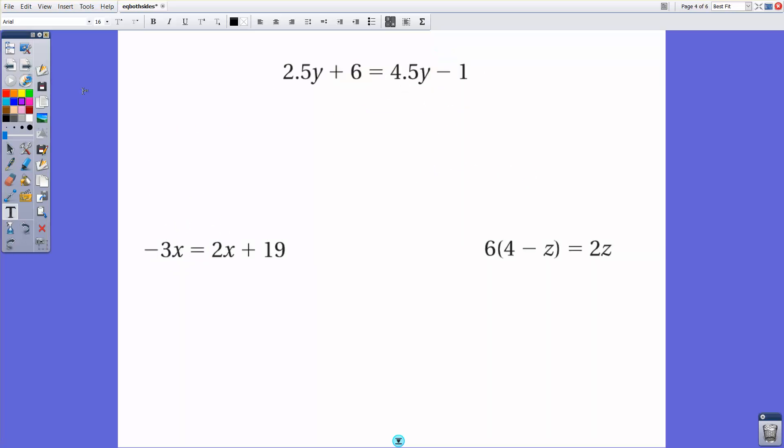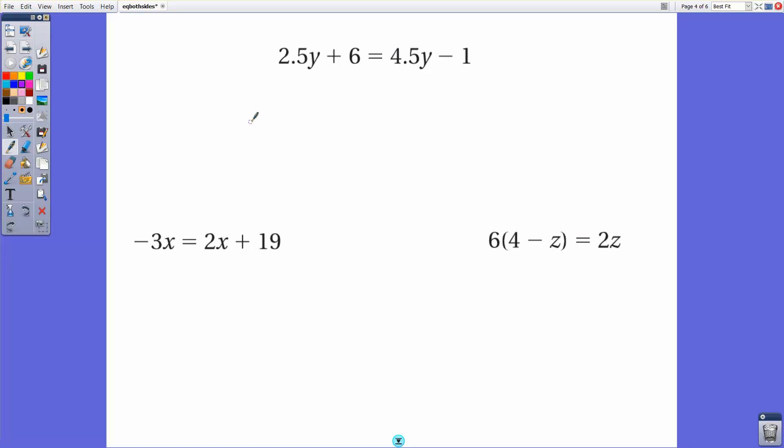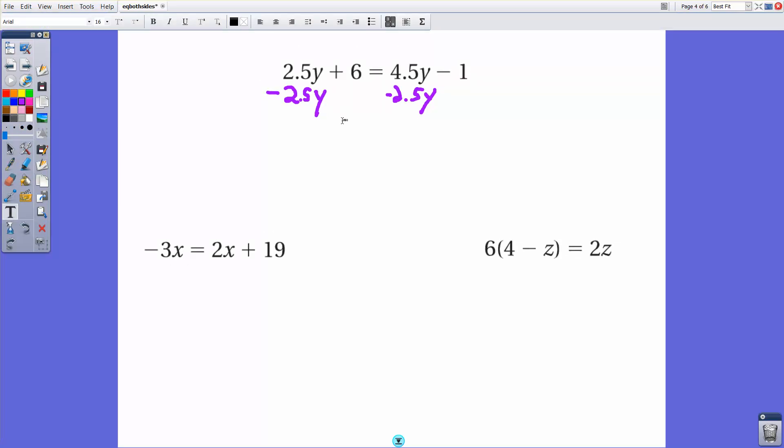Next few problems. Let's go ahead and bang these out. So we look at 2.5y plus 6 equals 4.5y minus 1. The correct first step here would be to move the 2.5y over because 2.5y is less than 4.5. So subtracting 2.5y on both sides will be a good first step. And then what we'll get here is we'll get 6 equals 2y minus 1.